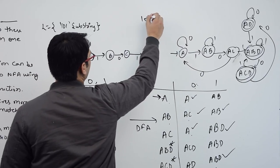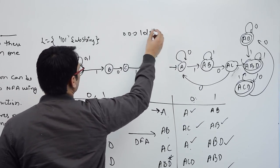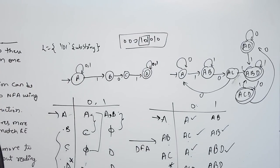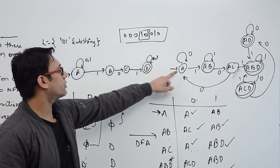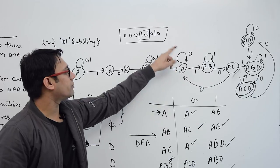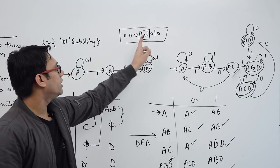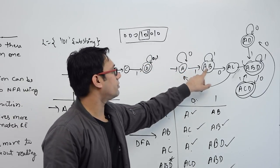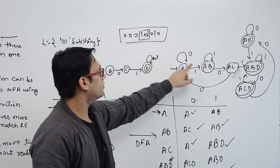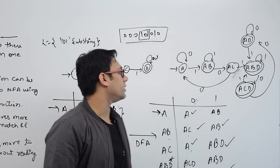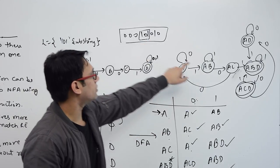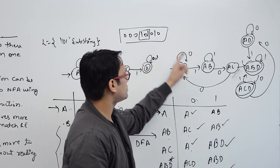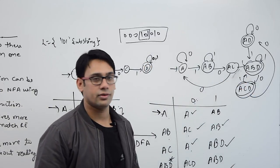Let us verify with the string 101000000. This string contains 101 as a substring, so it should be accepted. Starting at A: on 0 stay at A, on 0 stay at A, on 0 stay at A, on 1 go to AB, on 0 go to AC, on 1 go to ABD — accepted! Then on 0 go to ACD, on 1 go to ABD, and again on 0 go to ACD.